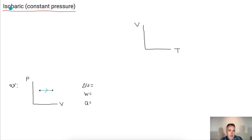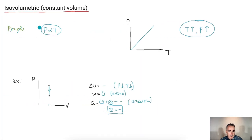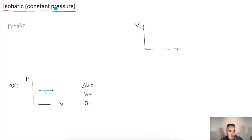The next one is called isobaric, or constant pressure. We're going to start the same way: PV equals nRT. This time we ignore the pressure since it's constant, giving us that volume is proportional to temperature.